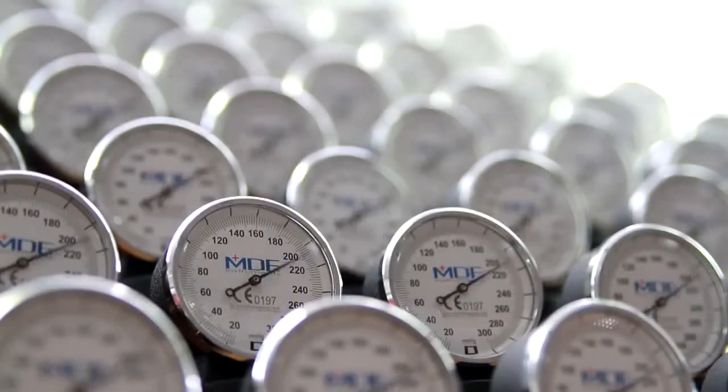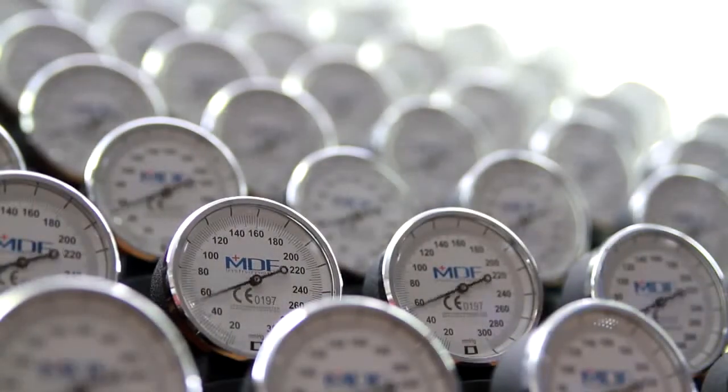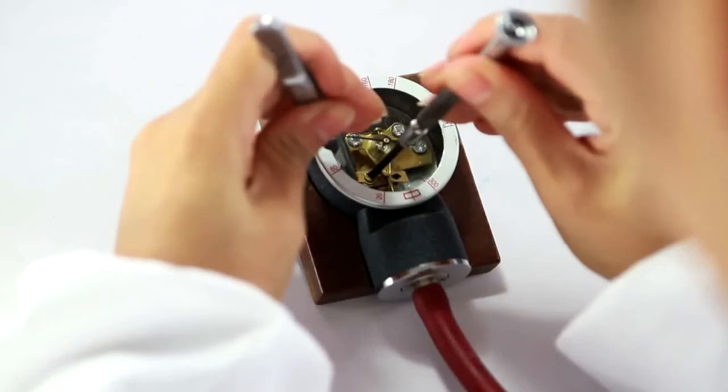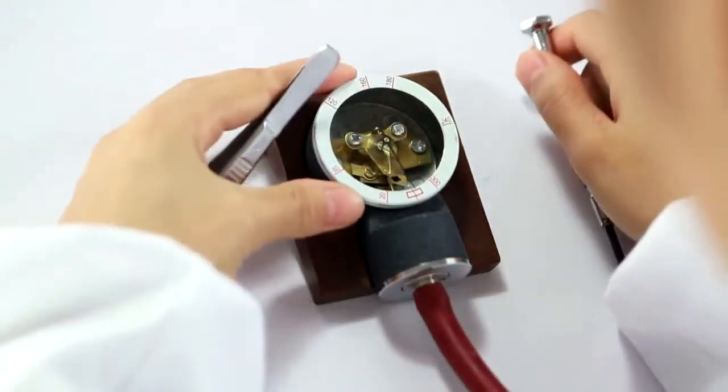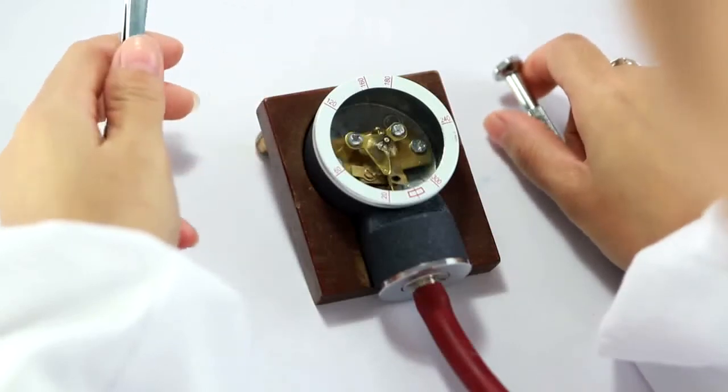That's why we stress test each one of our gauges 3,000 times before it even leaves our facility. That's each gauge, we're not spot checking. We also calibrate each gauge five times, and this is one of the things that really sets us apart from any other manufacturer out there.